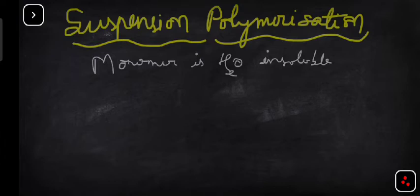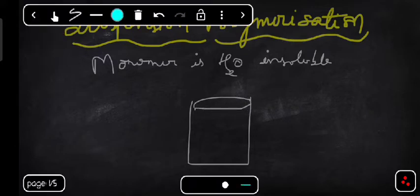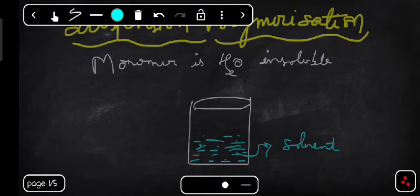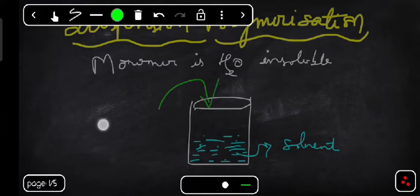Imagine this is the beaker or reactor vessel, and in this beaker you have water as a solvent. While in the previous case of solution polymerization, an organic solvent was used. But the only difference here is that water is used as the solvent. The water is used as a solvent and also the monomer is insoluble in the water. The next step is you need to add the monomer.